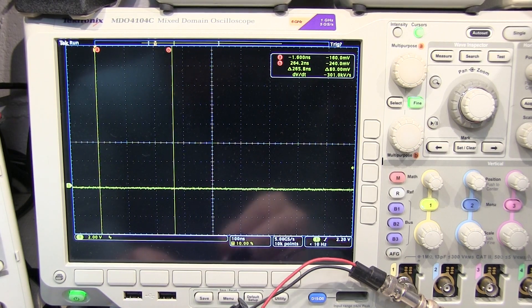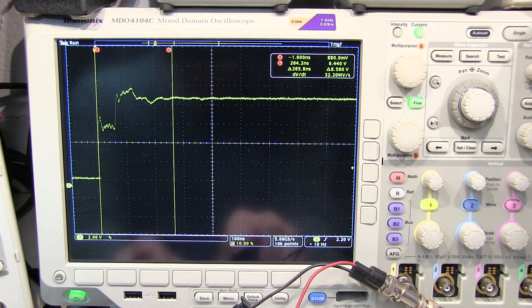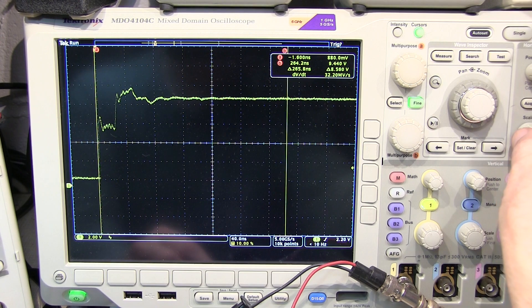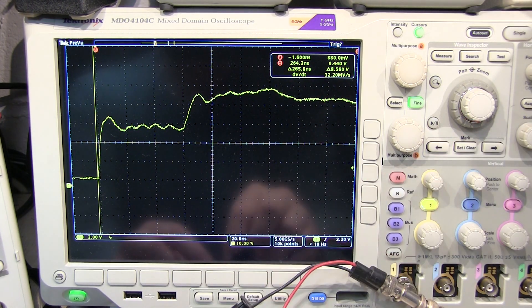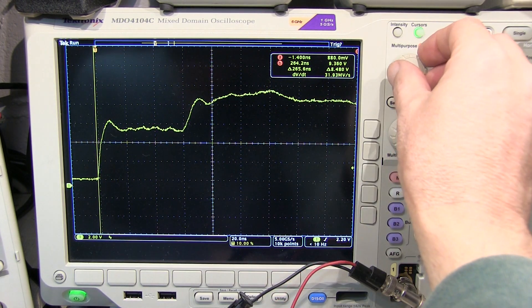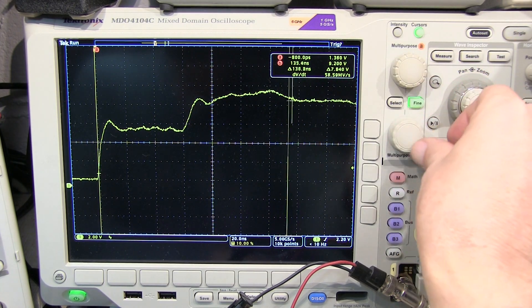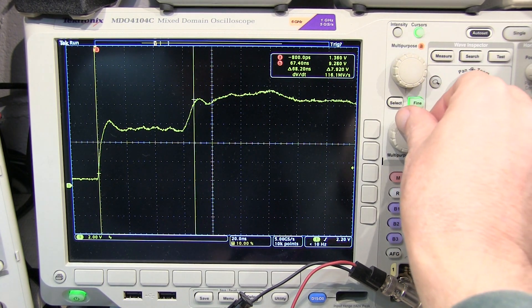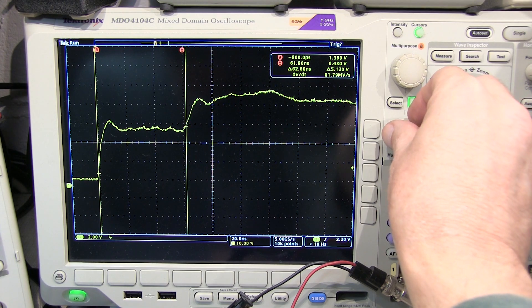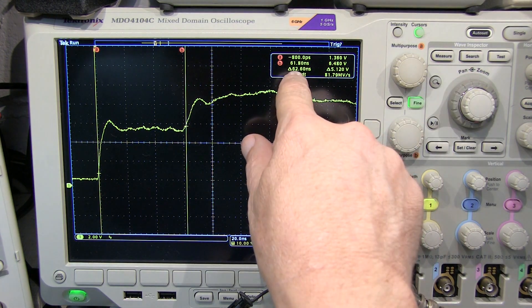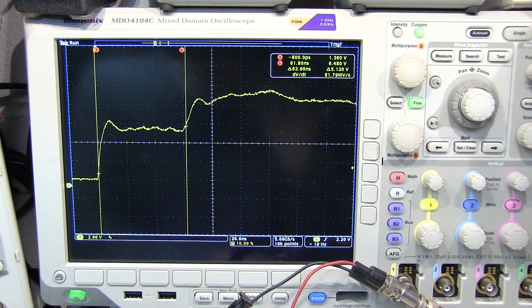And let's go trigger it and catch a sweep. Now it looks like I need to speed the scope up a little bit to get better resolution here. And let's grab another one. And let's position our cursors here kind of on about the 10% of that rising edge. And let's go grab the other edge here. And we can see my delta T is about 62.6 nanoseconds.